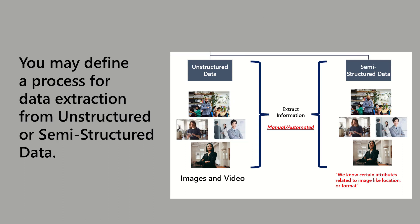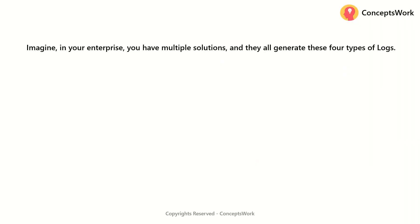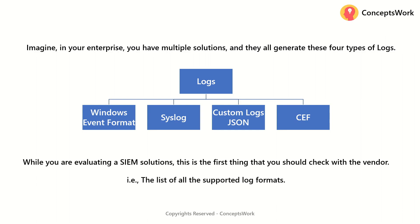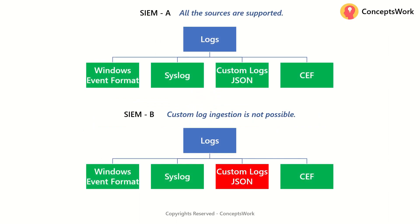I can tell you some of the methods where you can define a process to extract data from unstructured or semi-structured data altogether. Now imagine in your enterprise you have multiple solutions and they all generate these four types of logs, and you are evaluating a SIEM solution to adopt the right one. The first question you should ask your SIEM solution provider is: what are the list of supported log formats? Imagine you are evaluating two different solutions — SIEM vendor B says that everything is possible apart from custom data ingestion. In this case, for all obvious reasons, SIEM A should be your choice, because if you cannot even ingest the data, what exactly will you analyze?